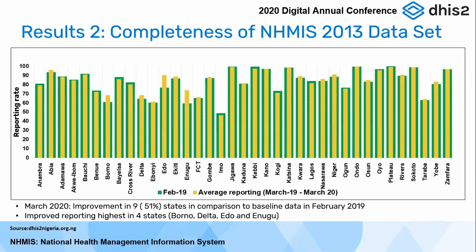This chart is showing us the completeness of the dataset — we're using just one dataset as a proxy. In Nigeria we have four datasets, but this is the major one used for reporting in-country. We documented baseline in February 2019 — those are the green bars showing where we were — and by March 2020 when the project had been underway, we did an average of reporting between March 2019 and 2020. There were a lot of improvements in reporting from the states. Notably, four states were the least reporting when we started, and a lot of focus was made on those states to bring them up.